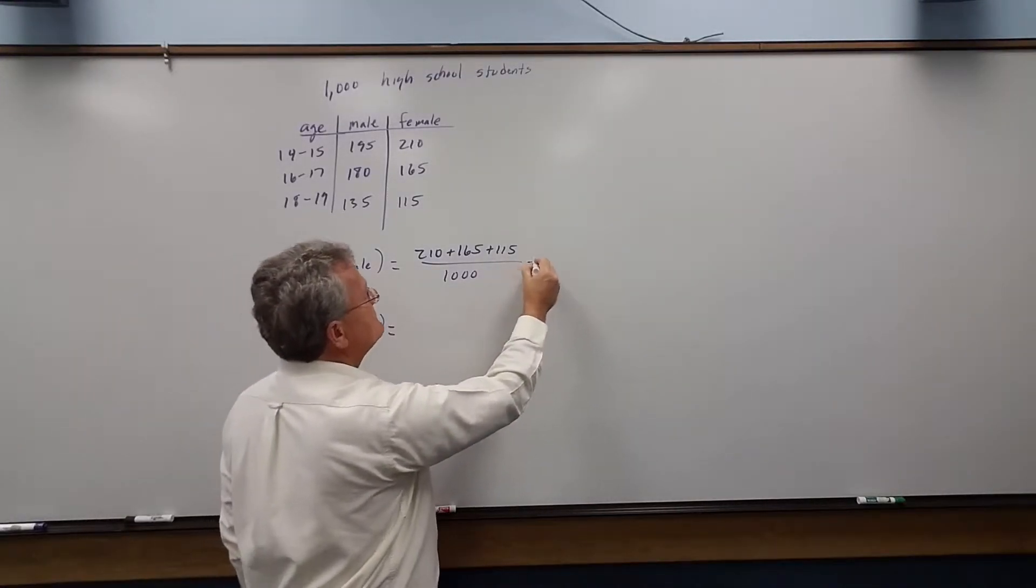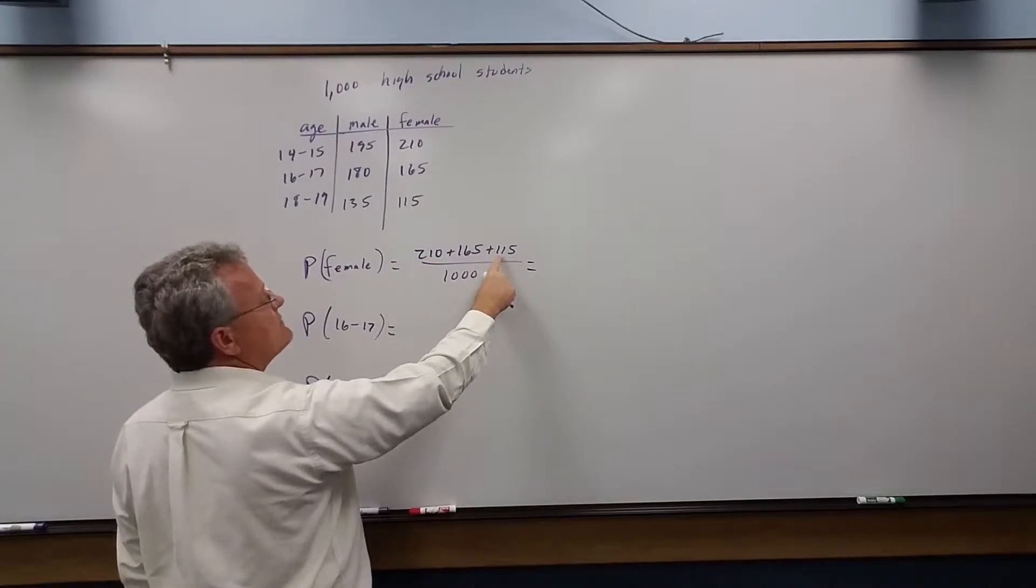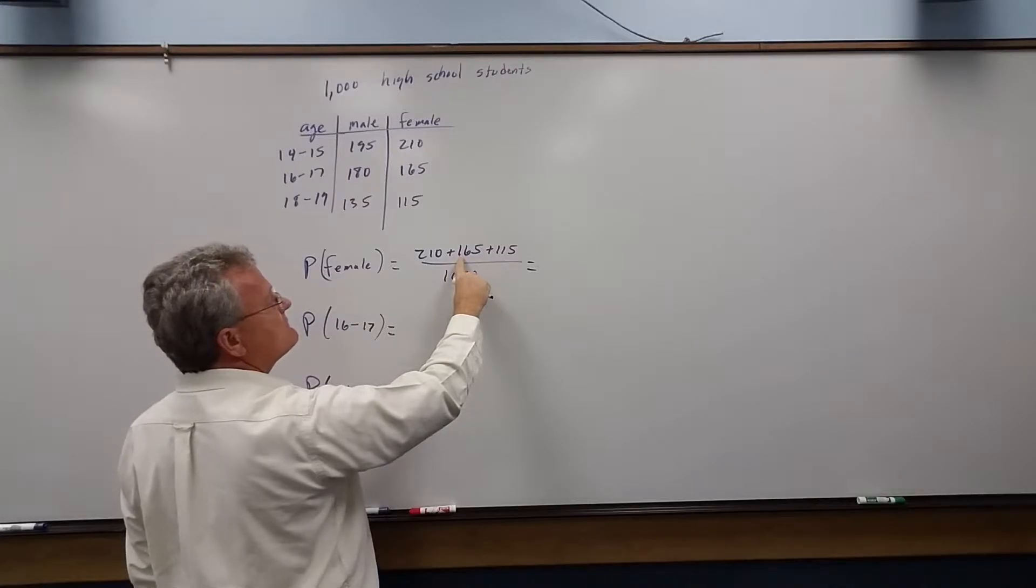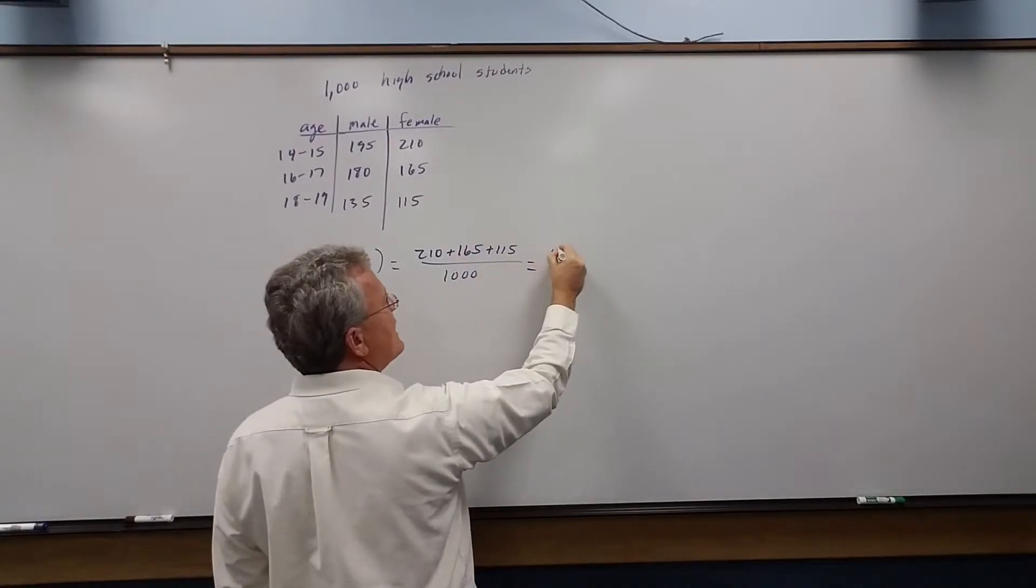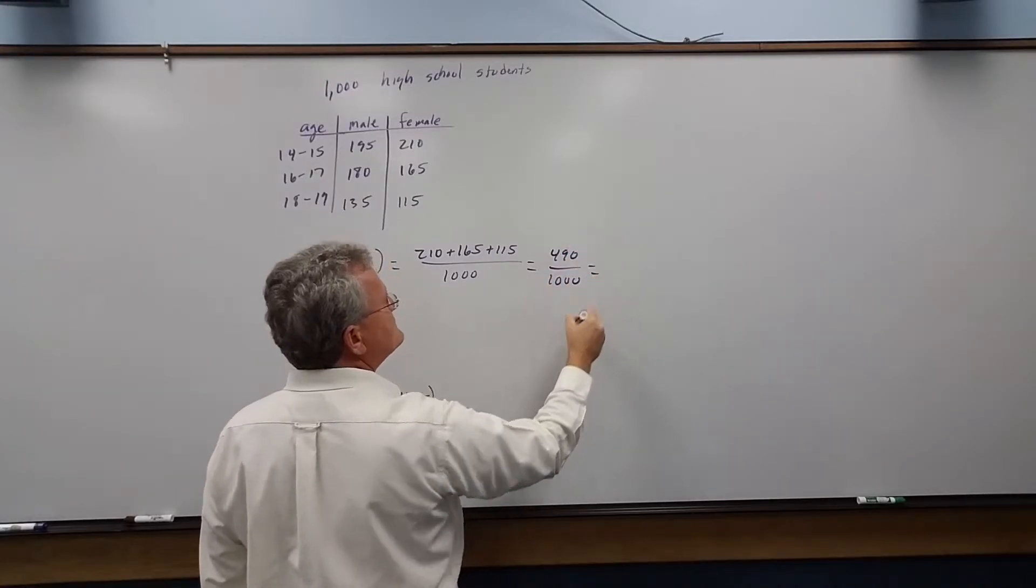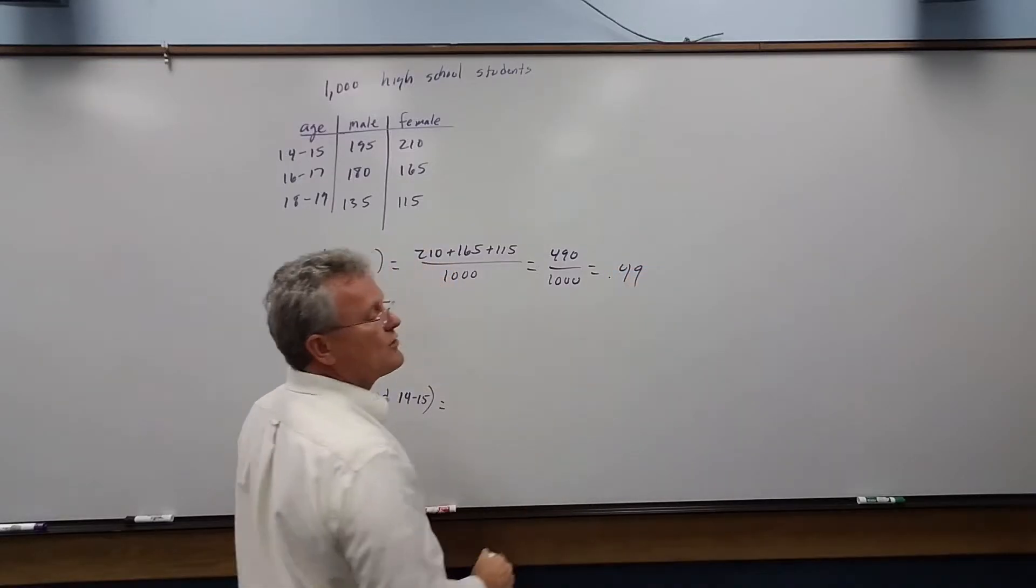Let me do this real quick. What do we get? 210... 375... 490, I believe, out of 1,000. And this gives us 49 out of 100, which is 0.49.